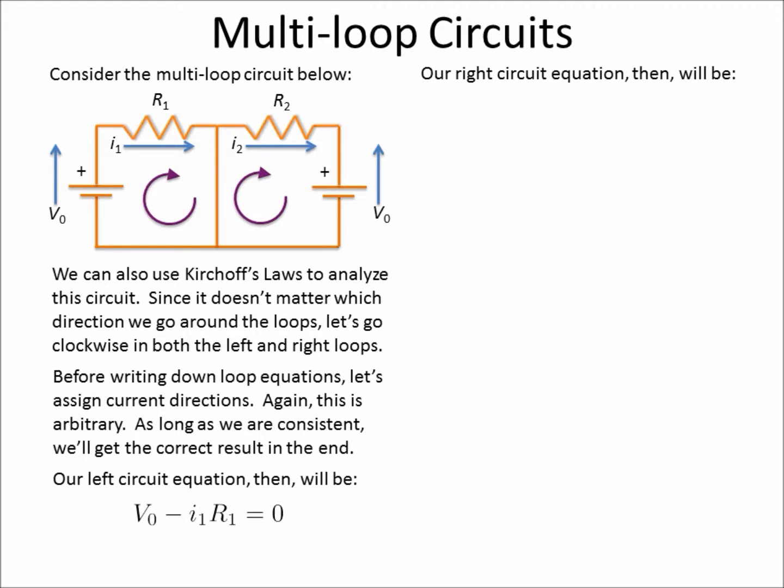Now if we look at the right circuit, we see that we have minus I2 times R2. This is the voltage drop through this resistor. We don't know what I2 is, but we know the voltage drop is equal to I2 times R2.